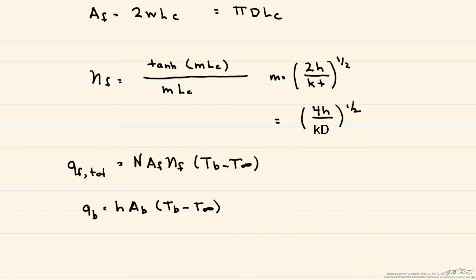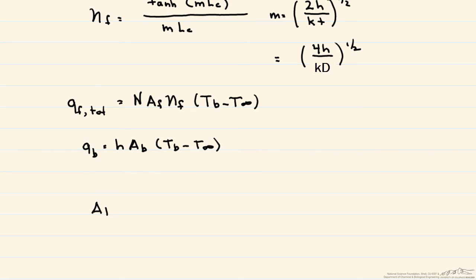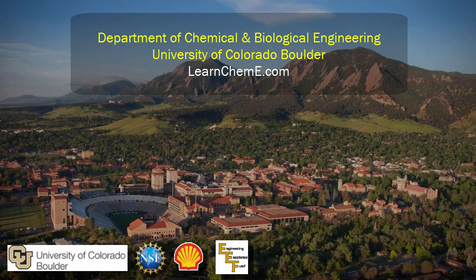So all we have to do now is calculate the area of the base. And what that's equal to is the total area of the base. Subtracting from that is the number of the fins times the area of the fin that is attached to the base. So for example, it's the thickness times the width for a rectangular fin, or it's pi times D for a pin fin. And so now all we do is add the total heat transfer from the fins to that heat transfer from the exposed base. And we end up with the heat transfer from an array of fins. And that's the final sequence.